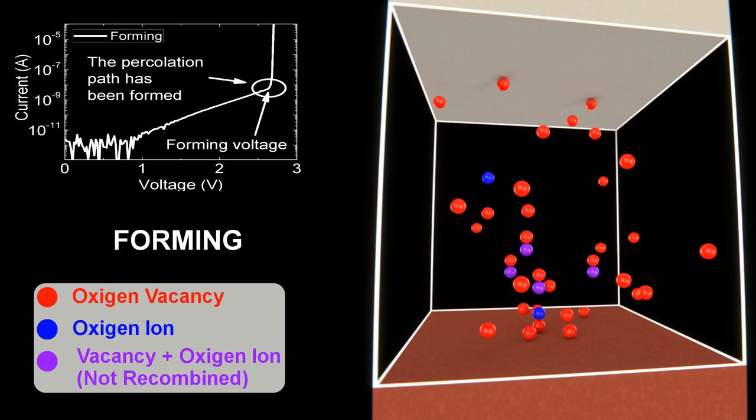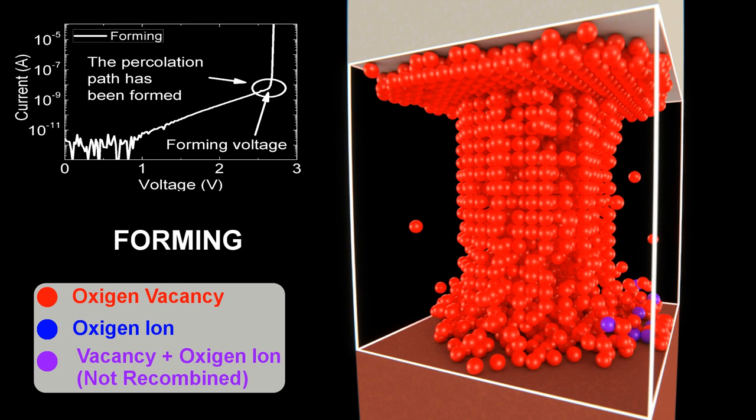The oxygen ions drift towards the top electrode and accumulate in the titanium layer. When the oxygen vacancies density is high, a percolation path can be formed. The forming process is completed.